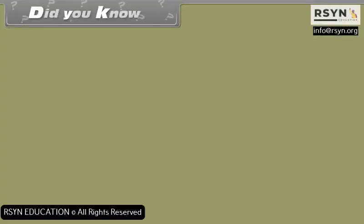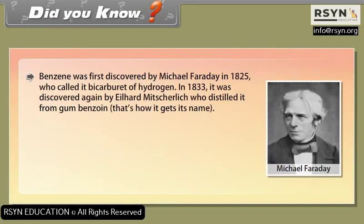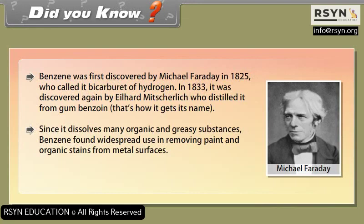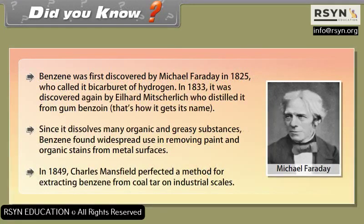Did you know? Benzene was first discovered by Michael Faraday in 1825, who called it 'bicarbureate of hydrogen.' In 1833, it was discovered again by Eilhard Mitscherlich, who distilled it from gum benzoin — that's how it gets its name. Since it dissolves many organic and greasy substances, benzene found widespread use in removing paint and organic stains from metal surfaces. In 1849, Charles Mansfield perfected a method for extracting benzene from coal tar on an industrial scale.